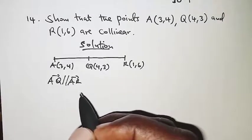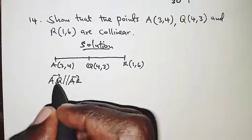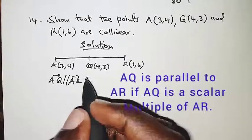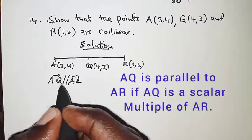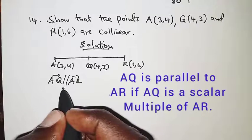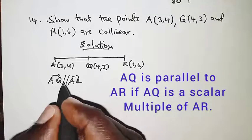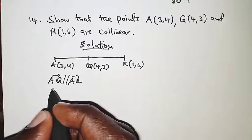That will give us enough reason that all three points are lying on the same line, and that is a straight line. So how to show that AQ and AR are parallel to each other?